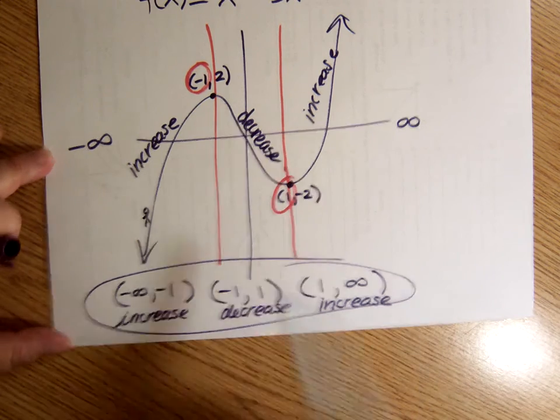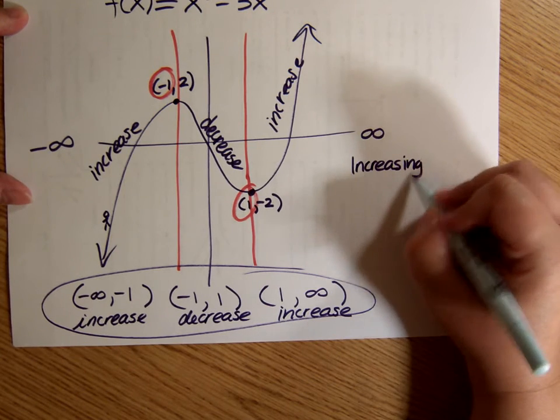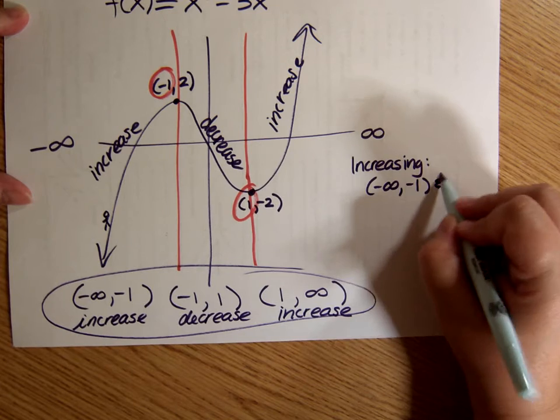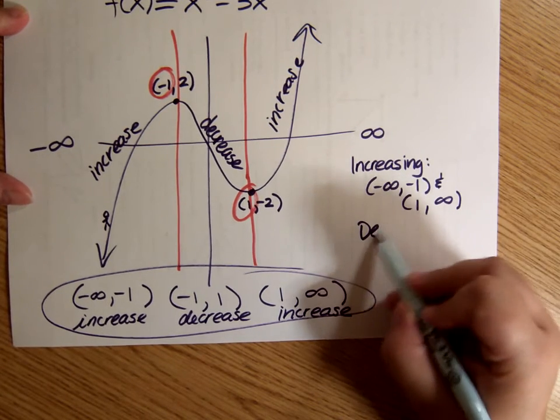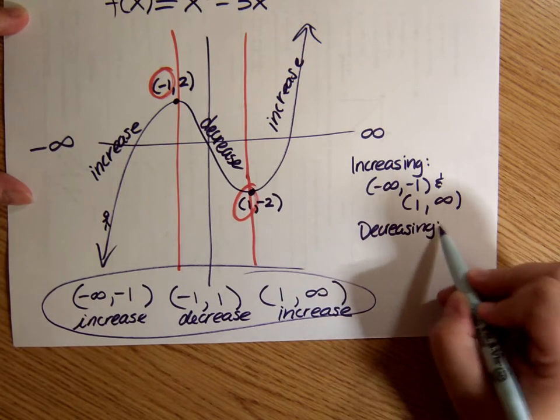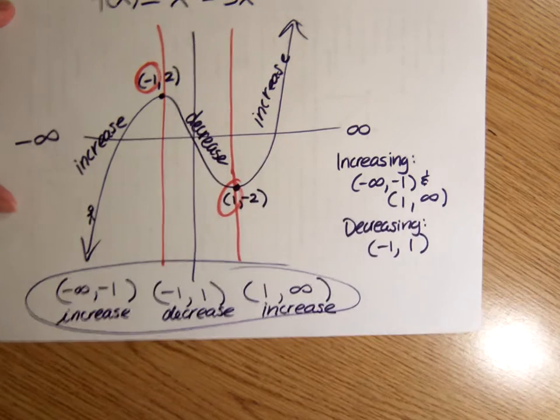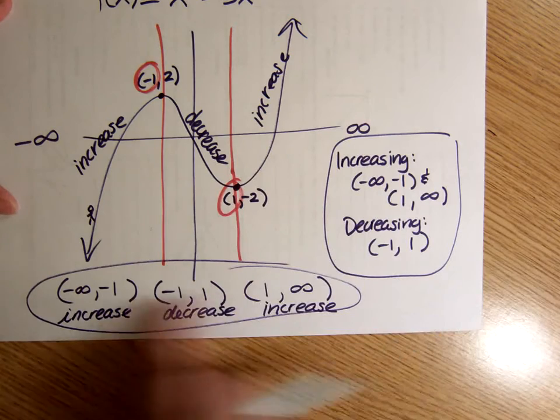Your teacher might want you to write something like, it's increasing from negative infinity to negative 1 and 1 to infinity. And it's decreasing, or maybe a comma there, or maybe even a union symbol I don't know, from negative 1 to 1. So that's my answer. It says the same thing as I said here, just organized a little bit differently.